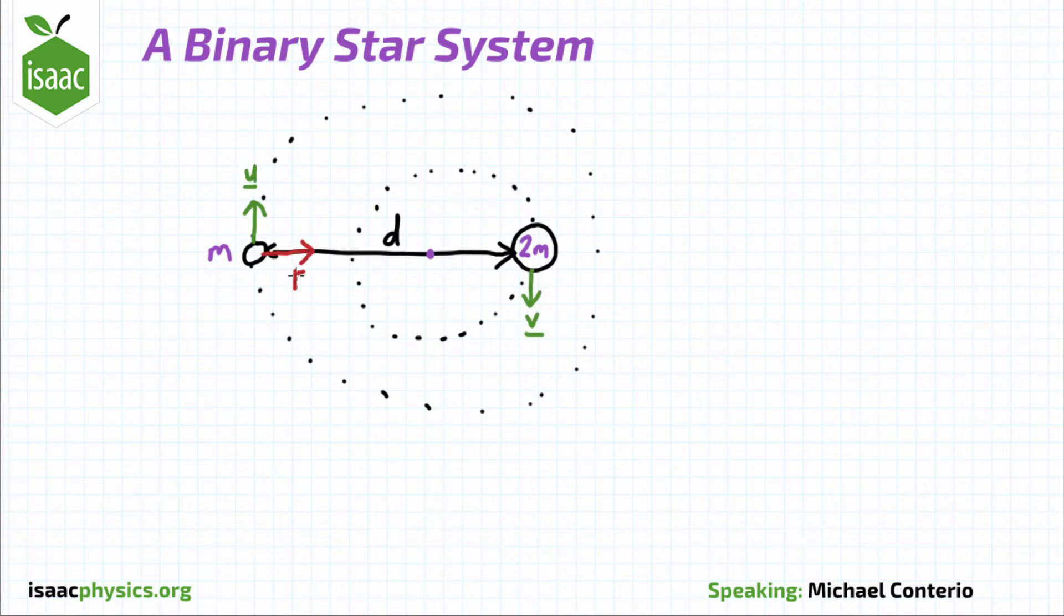The gravitational force in each star, due to the other star, acts inwards. And we can say here that F1 is equal and opposite to F2.